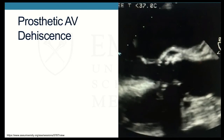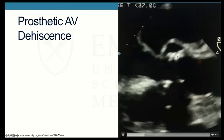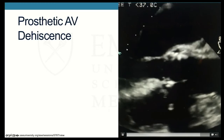This is a video from ASC showing a long axis view of the aortic valve. You can see the annulus bulging back and forth and a rocking motion of the prosthetic aortic valve suggestive of dehiscence.